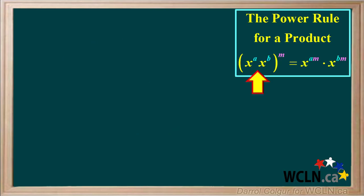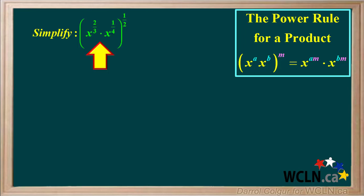Now we'll look at the power rule for a product. This states that the product of x to the power of a times x to the power of b, raised to the power of m, is x to the power of a times m times x to the power of b times m. Let's do an example. We're asked to simplify the product x to the 2 thirds times x to the 1 quarter, raised to the power of 1 half. Applying the power rule for a product, we get x to the power of 2 thirds times 1 half, times x to the power of 1 quarter times 1 half.